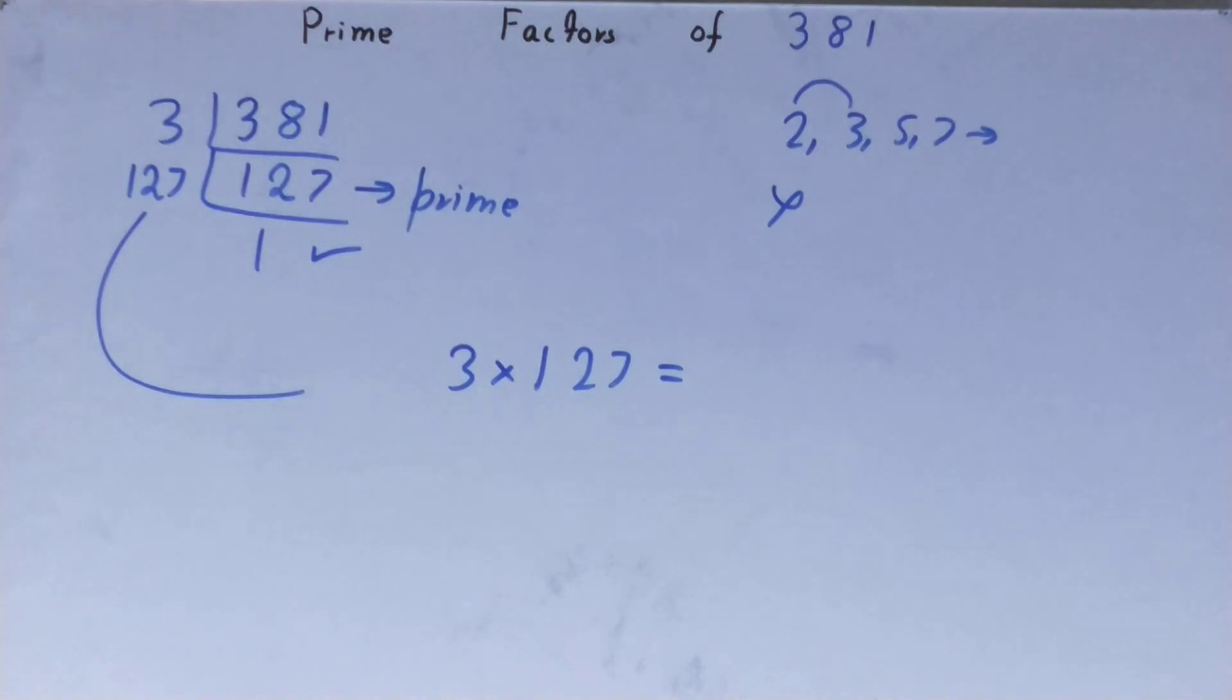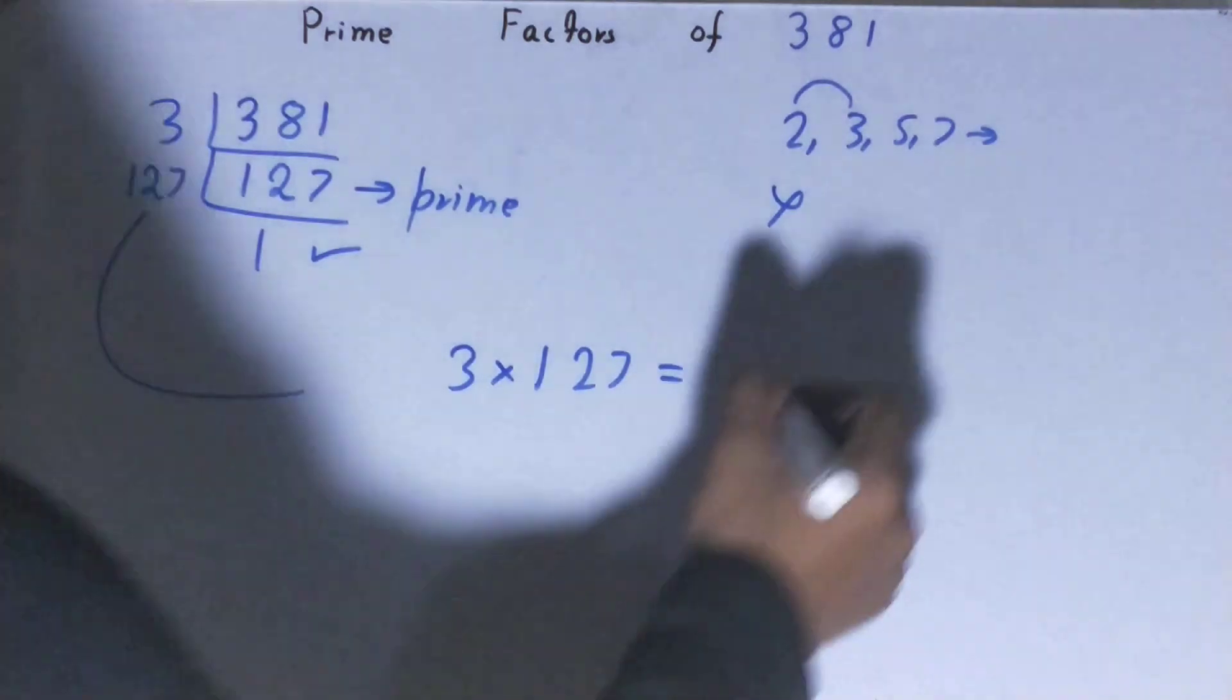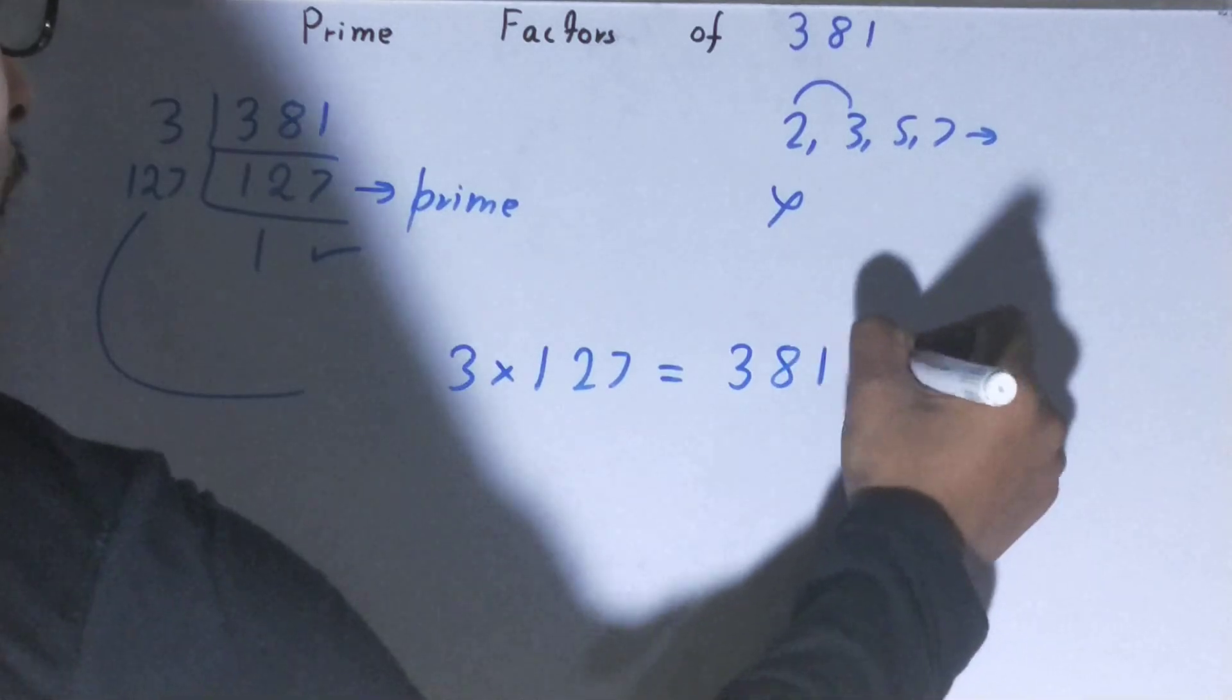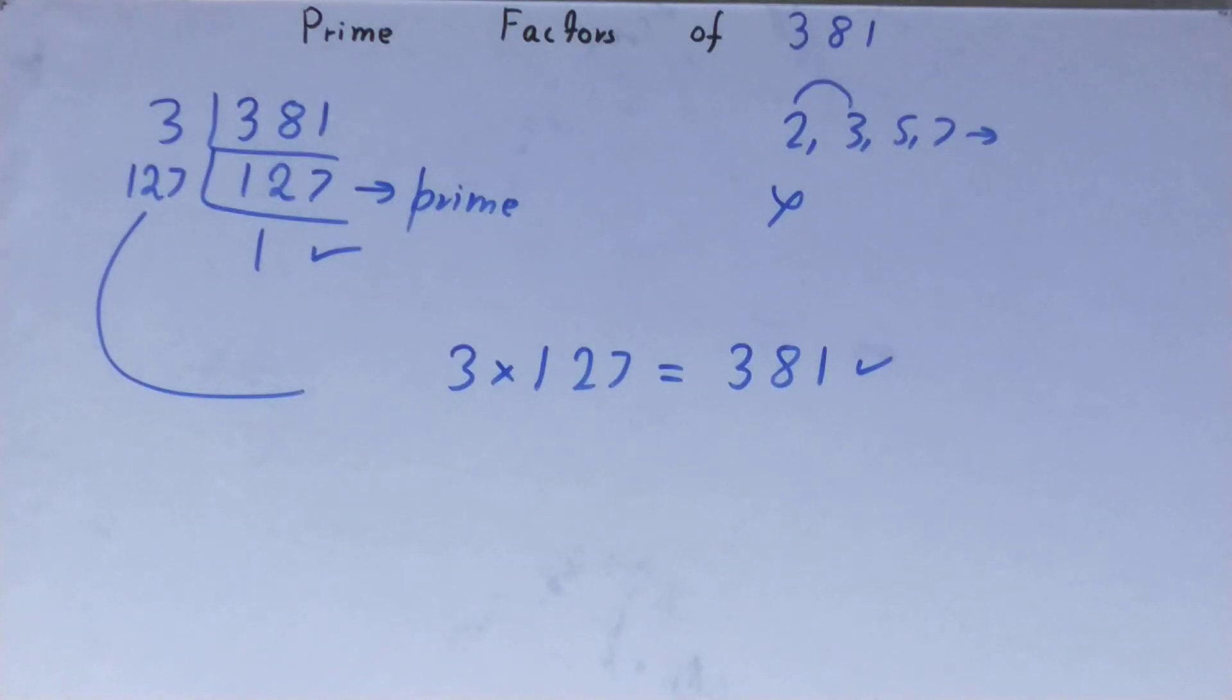If you want to check whether it is right or not, you can multiply them, and if on multiplying you have the number back again, that means your calculation is correct. If not, you need to recheck.